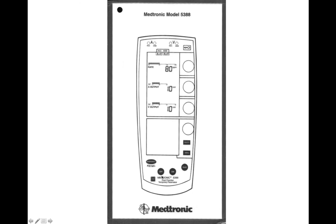We also have your on/off — to turn this off, you press and hold. This is a four-second pause right here. And this right here is your emergency button. When you press this button, it turns the device on in an asynchronous mode at a default rate of 80, with maximum milliamps of 20 and 25 — so 80, 20, and 25.